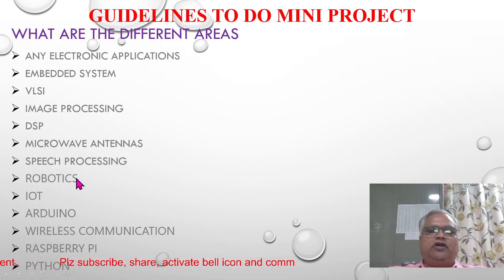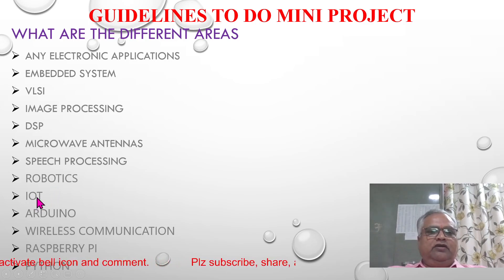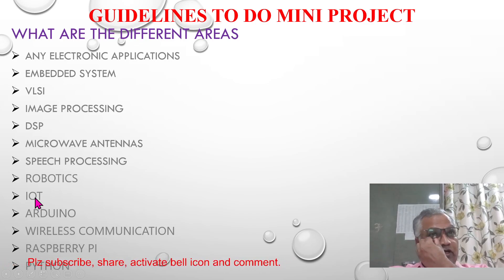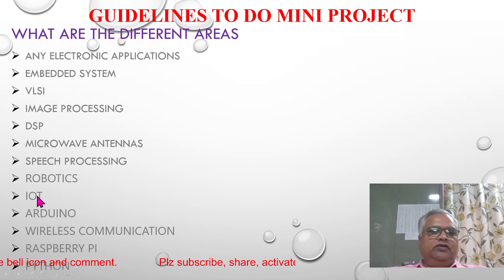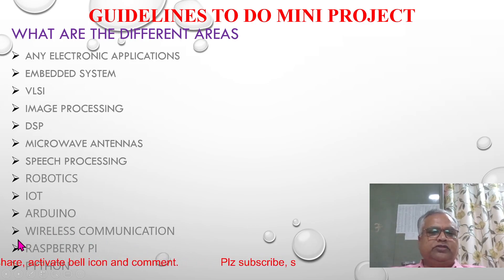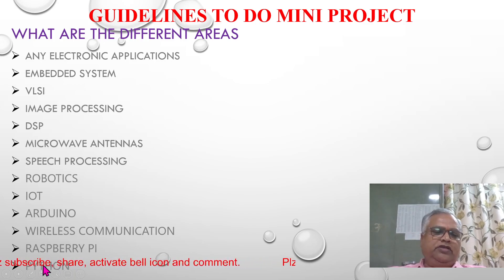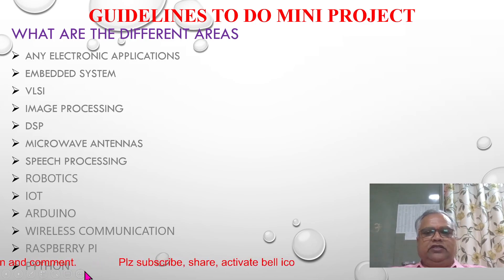Robotics is a combination of hardware and software, though it is a bigger project. IoT — Internet of Things — is again a combination of hardware and software; you can control many different devices at home with the help of internet. Arduino-based projects are again hardware. Wireless communication projects and Raspberry Pi are hardware-based. Python is purely software and is the latest programming technology — you can implement any idea using Python.